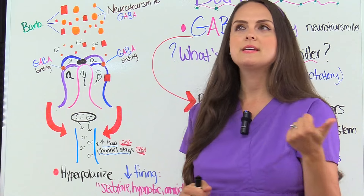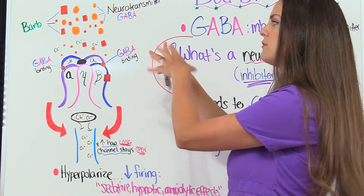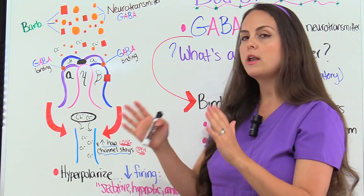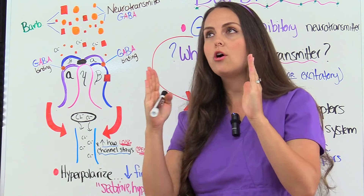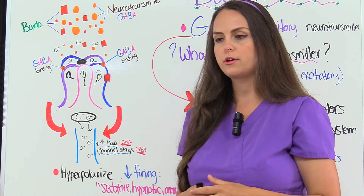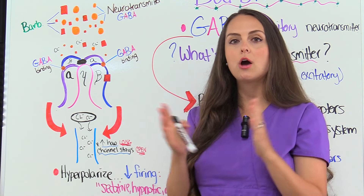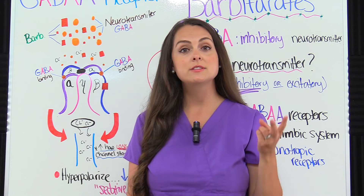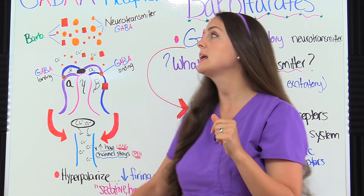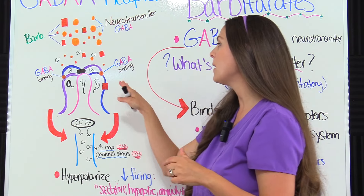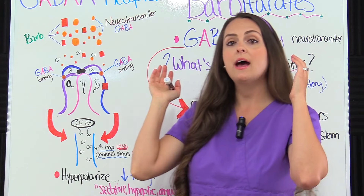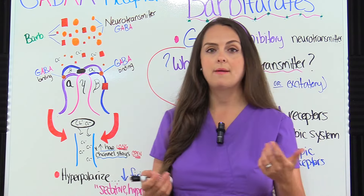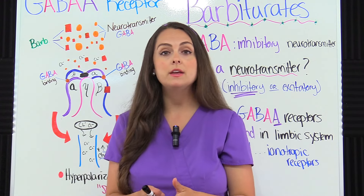Comparing barbiturates to benzodiazepines: barbiturates cause the chloride channel to stay open longer — increasing the duration — so more chloride flows through. Benzos, on the other hand, cause the channel to open more often. Another key difference is that high dosages of barbiturates can activate GABA-A receptors without the help of GABA neurotransmitter binding, which benzos cannot do, making barbiturates even more potent than benzodiazepines.